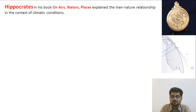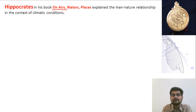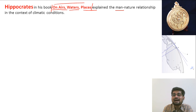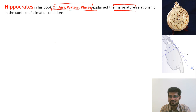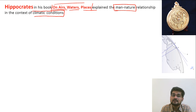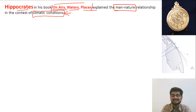Hippocrates was another important scholar whose famous book, 'On Airs, Waters, and Places,' explained the man-nature relationship, which is core to geography. He linked people and culture to climatic conditions, making his work foundational to understanding geographic influences on human populations.